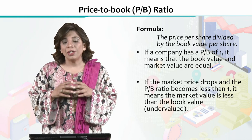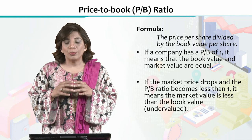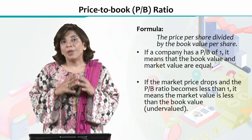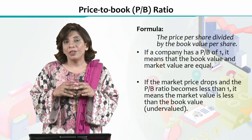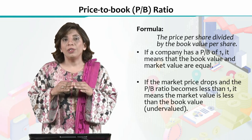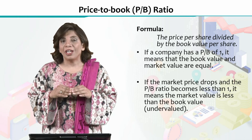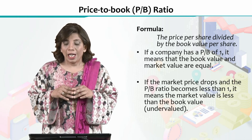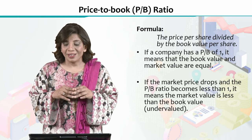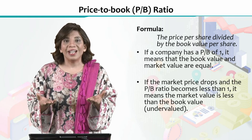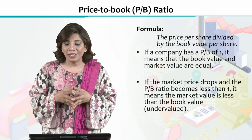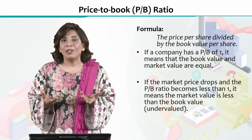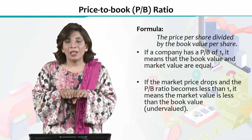If the market value of a share is exactly equal to the book value of that share, then the ratio will become 1. If the ratio is 1, it means that there is no difference between the book value and the market value of a share, and the two values are at par.